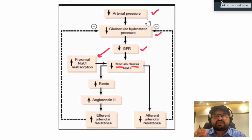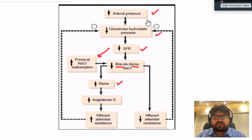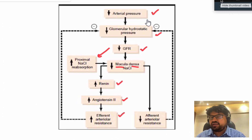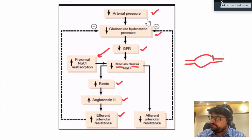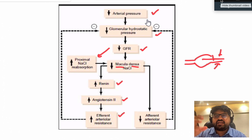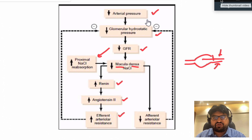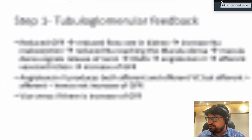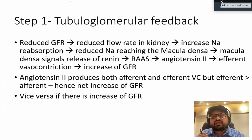The macula densa senses the reduction in circulating volume or blood pressure and releases renin. Renin is converted to angiotensin 2, which causes efferent arteriolar vasoconstriction. Blood is retained in the glomeruli, increasing glomerular filtration pressure and restoring GFR. This is tubuloglomerular feedback — the mechanism by which the kidney maintains circulating volume.